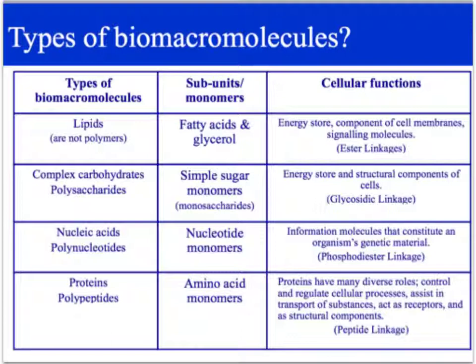Our final type of biomacromolecule is a protein or polypeptide — poly meaning many. Their subunits are the amino acids. Remember, what makes amino acids unique is their R group. The function of proteins: they have a heap of different roles — they can control and regulate cellular processes, enzymes assist in transport of substances, there are protein channels within cell membranes, and they act as receptors and as structural components. They join together through peptide linkage.